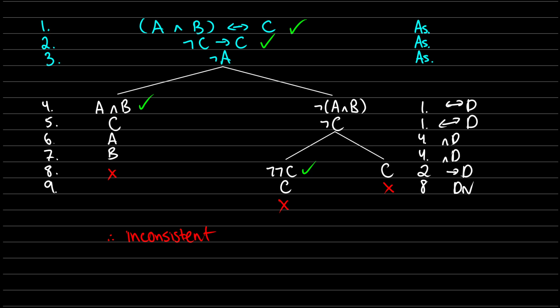So these well-formed formulas are inconsistent with each other — meaning (A and B) if and only if C, not C arrow C, and not A cannot all be true at the same time. Even though we haven't finished decomposing not (A and B), we don't have to continue because all branches are already closed. You have to be a little strategic about which formulas you decompose first. It mostly comes with experience and being familiar with how these well-formed formulas work — there's no quick trick, just practice.